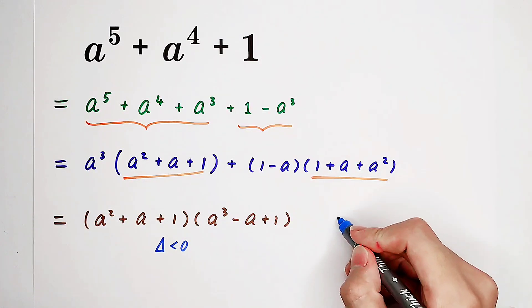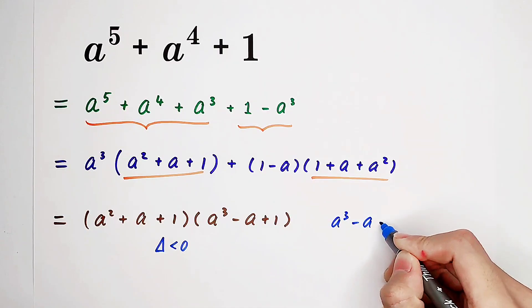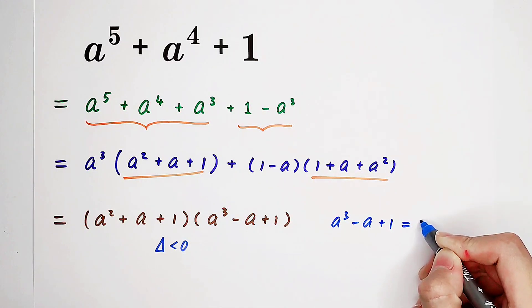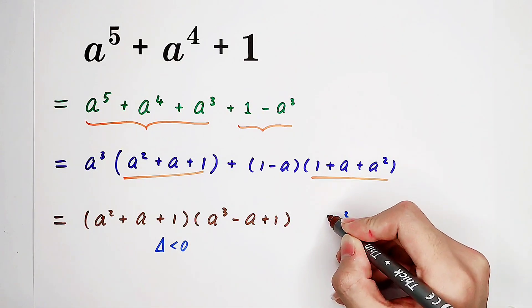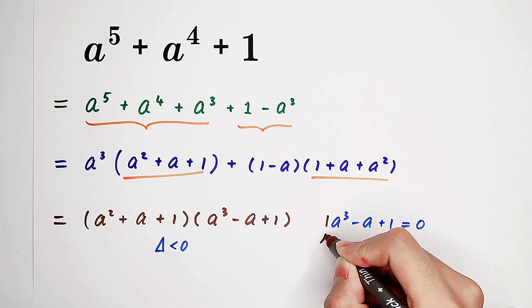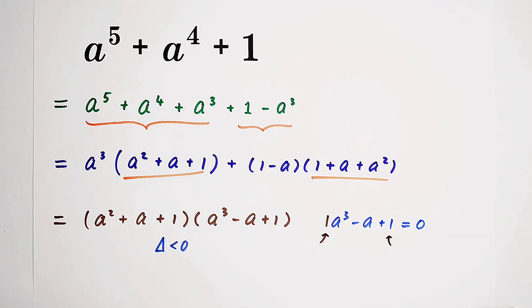And for this one, if we let this one equal to 0. Because here we have 1, and the coefficient here is 1 as well. Now, all rational roots have the form positive or negative 1. You can find out that 1 cubed minus 1 plus 1 does not equal to 0.